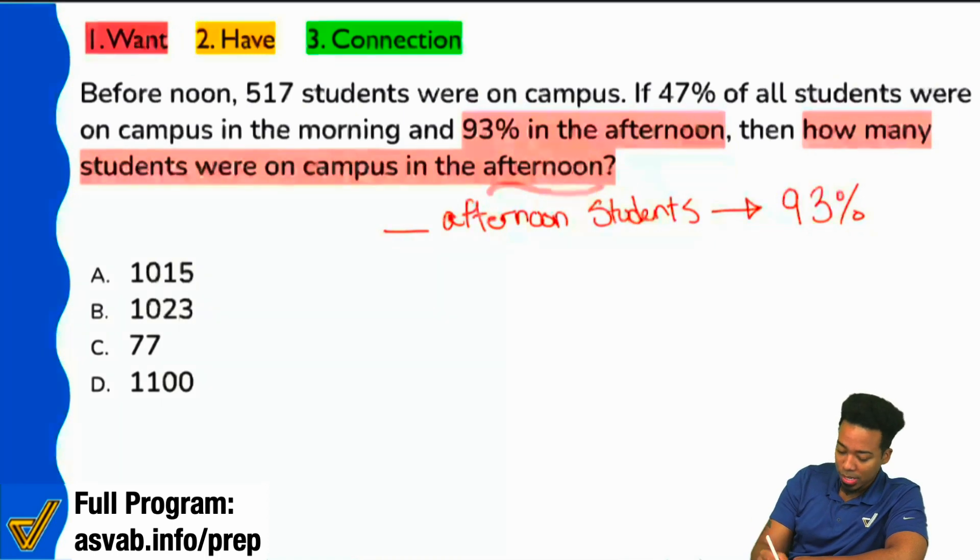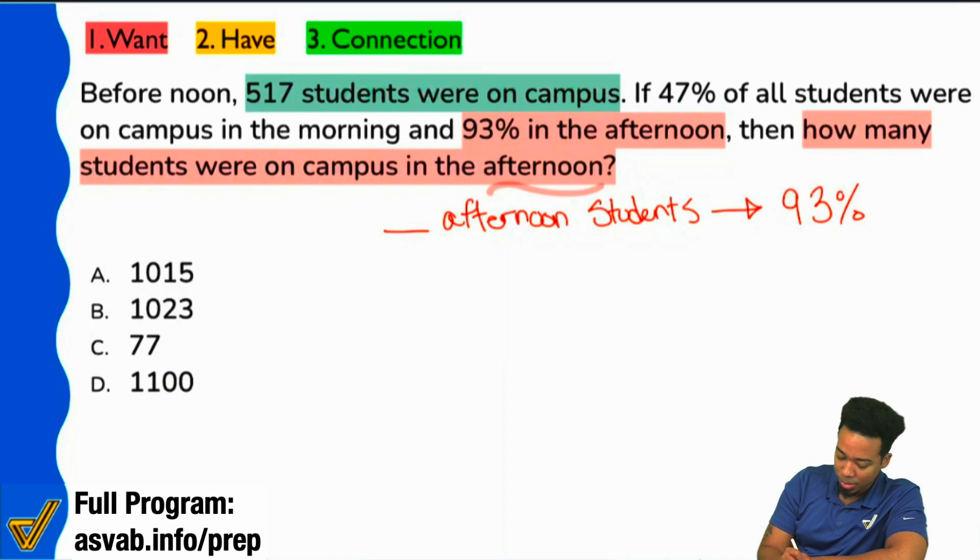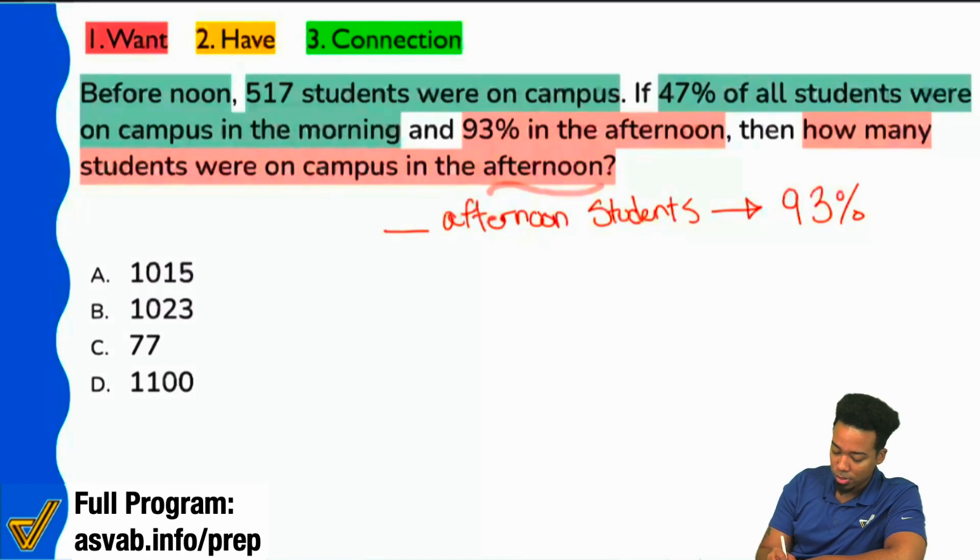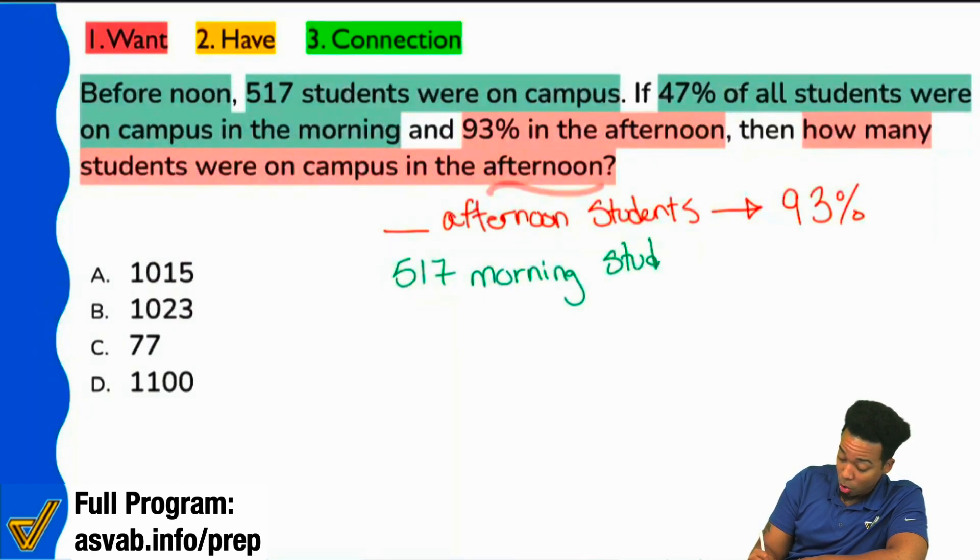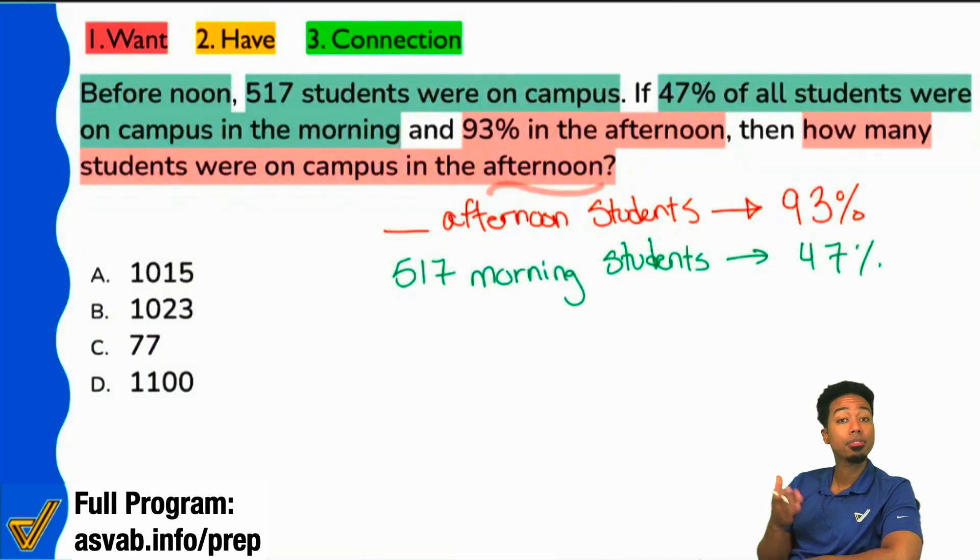Next up, notice how we're given over here 517 students were on campus before noon or in the morning, and we see that it says 47% of all students were on campus in the morning. So everyone, is it fair to you that we express it like this? 517 morning students, and that corresponds with 47%.